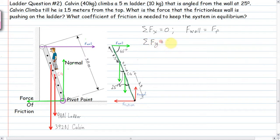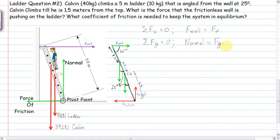For the sum of the forces in the Y direction — up and down — we have the normal force pointing up, and the force of gravity of the ladder and the force of gravity of Calvin pointing down. So the normal force has to equal the force of gravity of the ladder plus the force of gravity of Calvin.